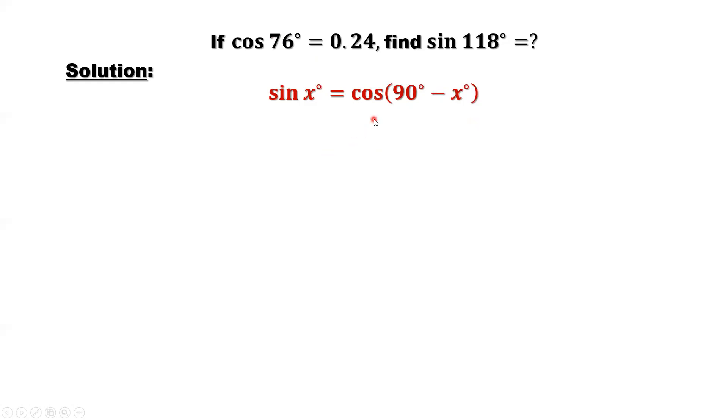We use this result to convert sine of 118 degrees into cosine. 90 minus 118 equals negative 28. Cosine negative 28. This angle is in the fourth quadrant. In the fourth quadrant, cosine is positive. So here, with negative sign, without negative sign, they are equal.